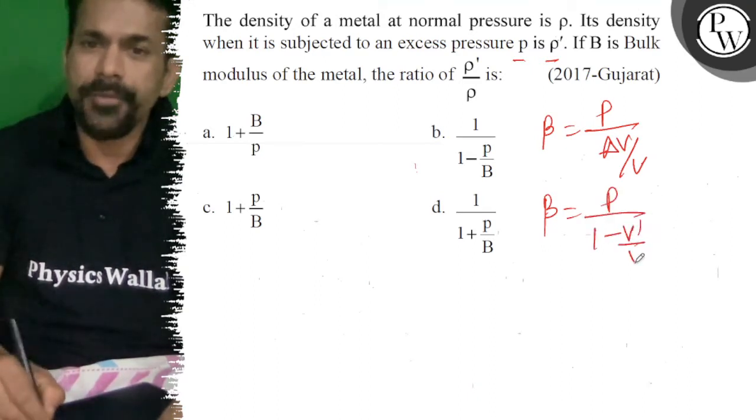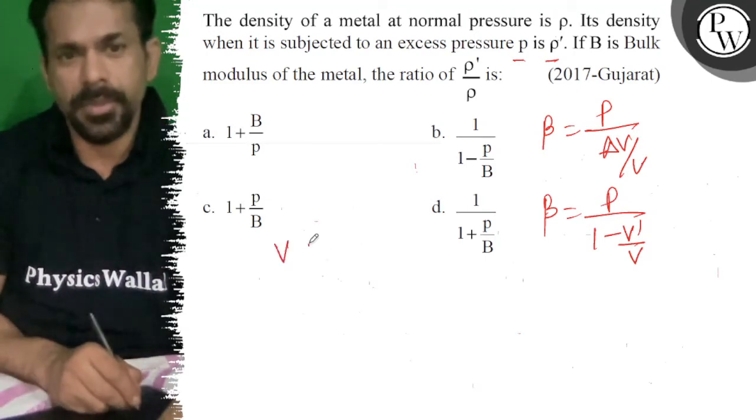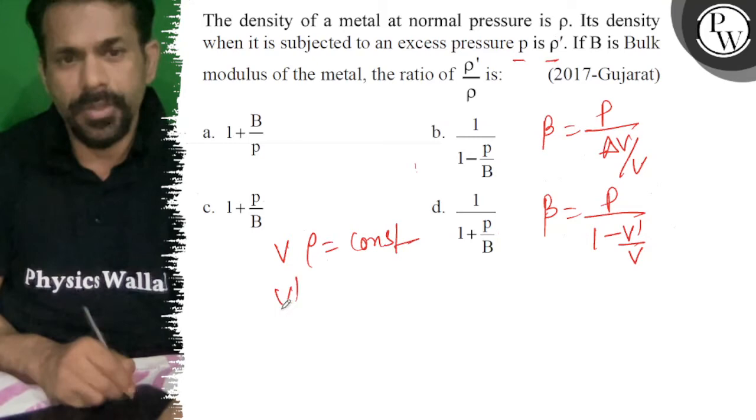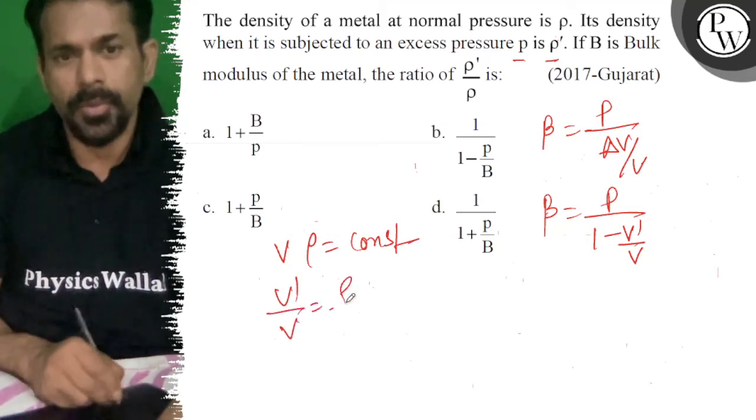But we know V ρ is constant, so V dash upon V is equal to ρ upon ρ dash.